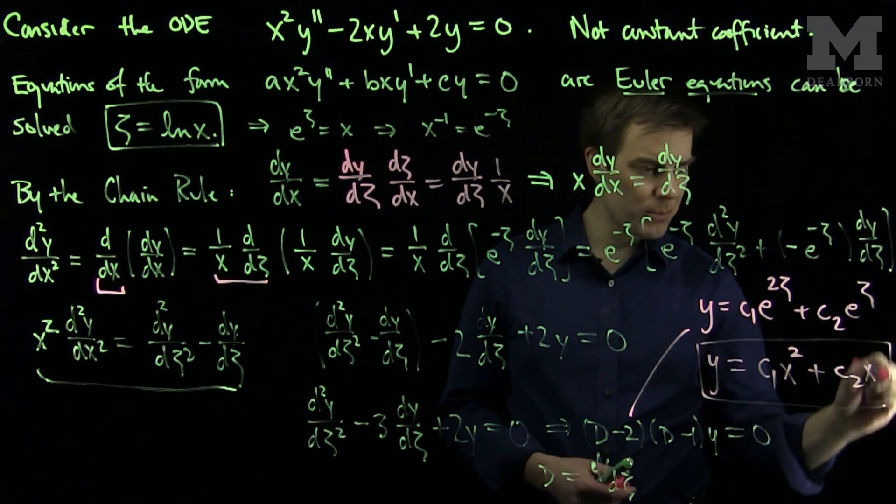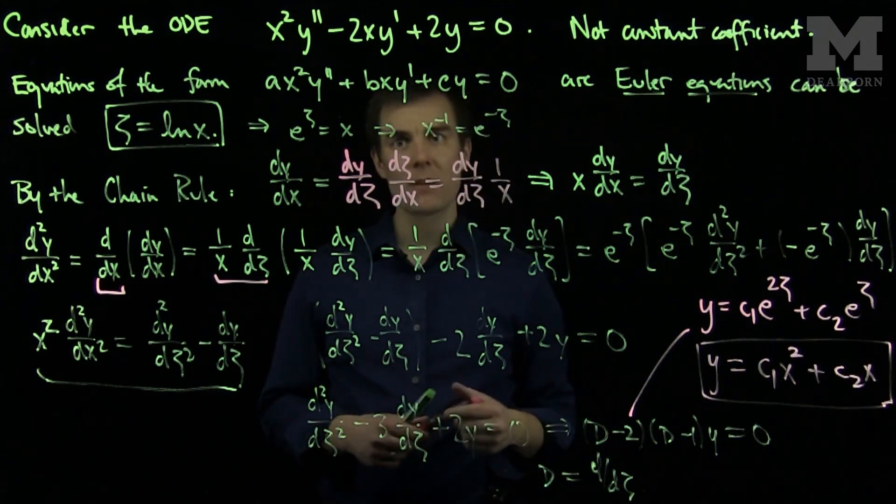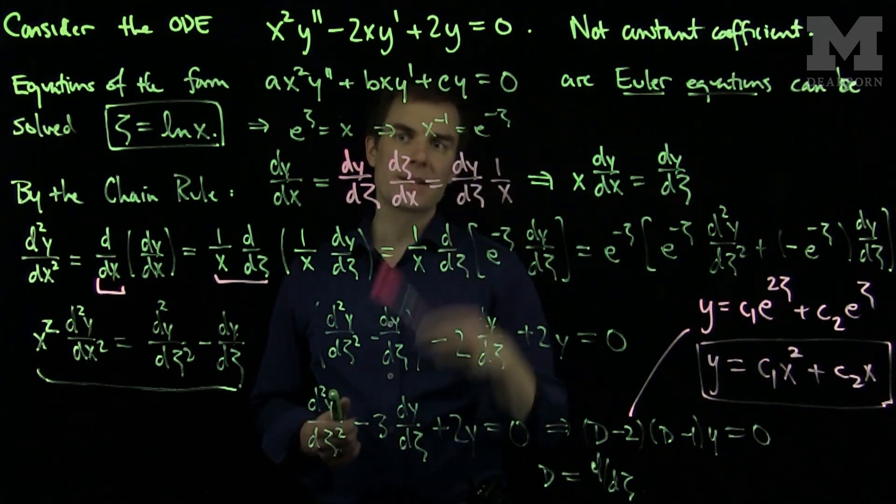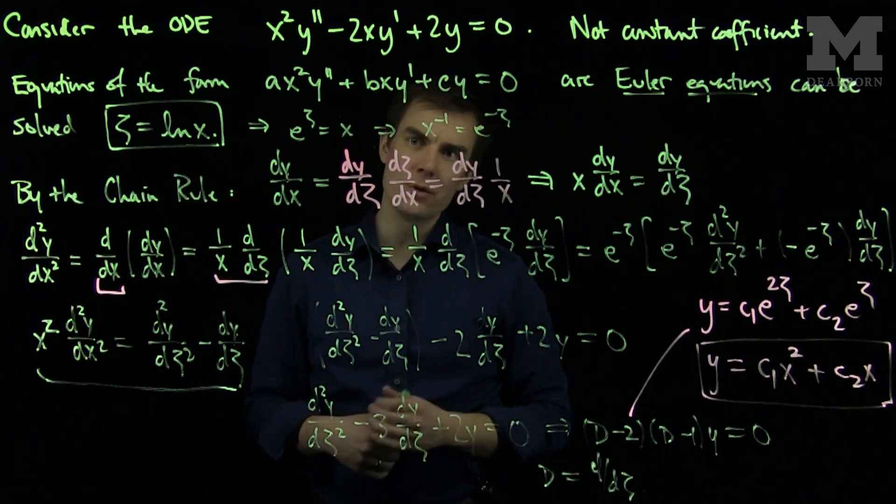So by converting to logarithmic variables we are able to solve any differential equation that has this Euler form by introducing this coordinate change and using the chain rule. Thank you very much.